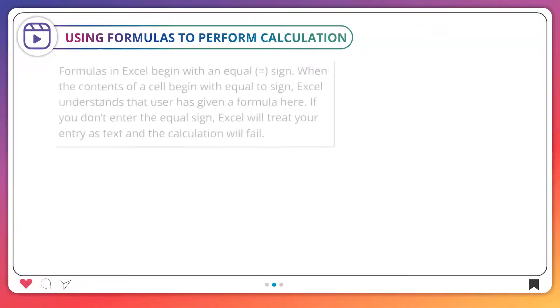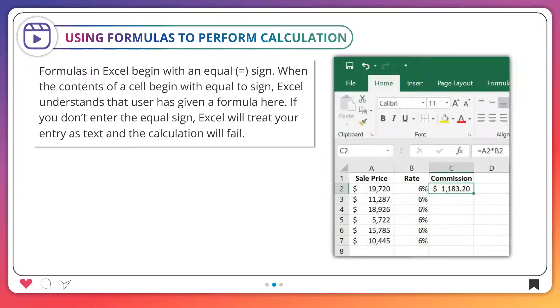Using formulas to perform calculation. Formulas in Excel begin with an equal sign. When the contents of a cell begin with equal to sign, Excel understands that user has given a formula here. If you don't enter the equal sign, Excel will treat your entry as text and the calculation will fail.